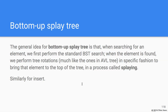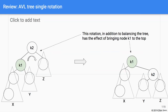For bottom-up splay trees, the general idea for search is: first do a standard BST search to find the element somewhere in the tree, then perform a series of tree rotations — just like AVL tree rotations — to bring the found element to the top of the tree. This process is called splaying. For insert, the same idea applies: the newly inserted element is brought to the top.